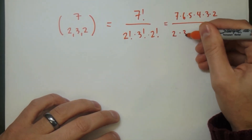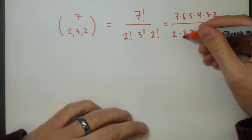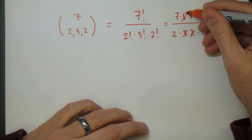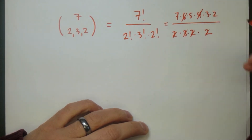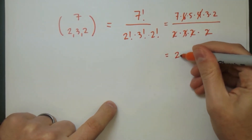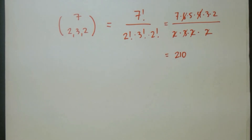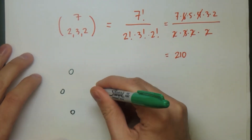Writing it out, you get these products, and simplifying by canceling like terms, we get 7 times 5 times 3 times 2, which is just 210. So there are 210 different ways of breaking up the 7 people into the smaller groups.